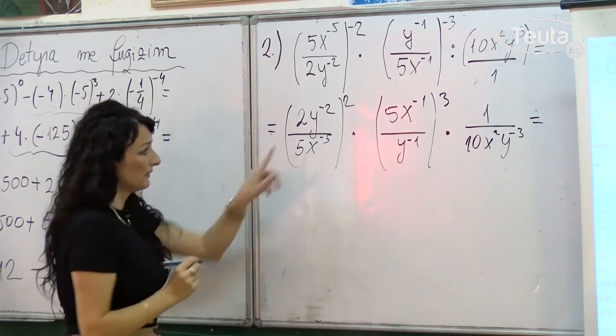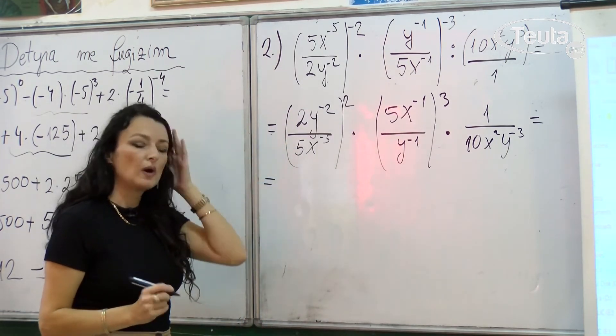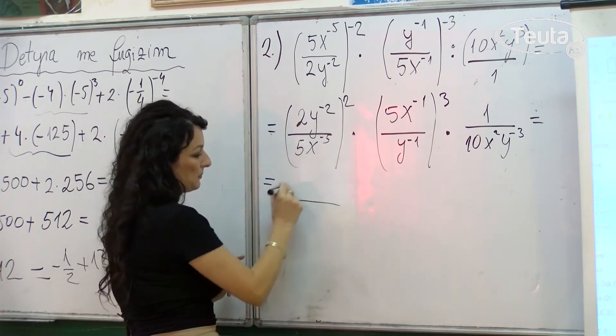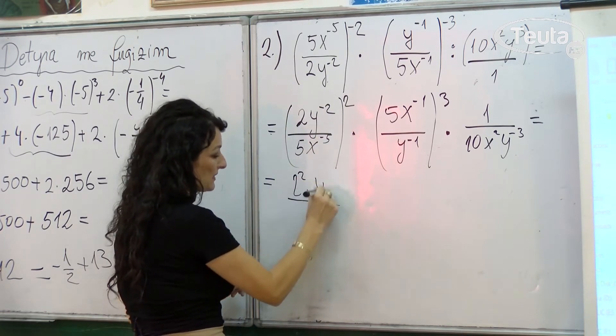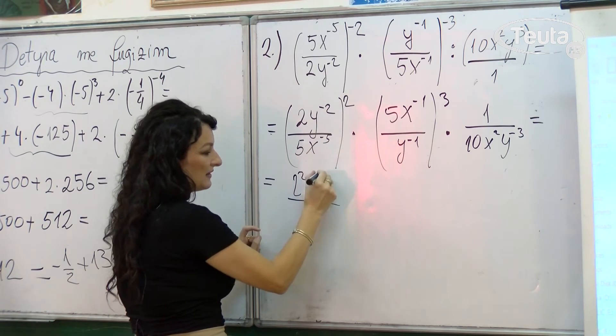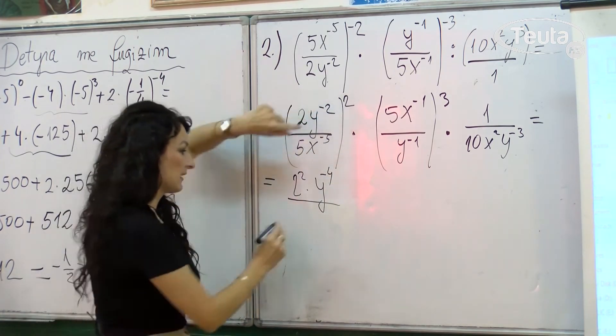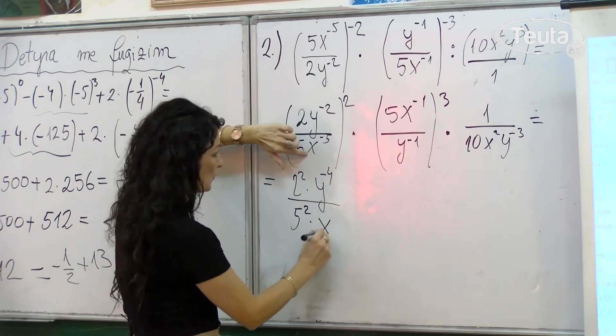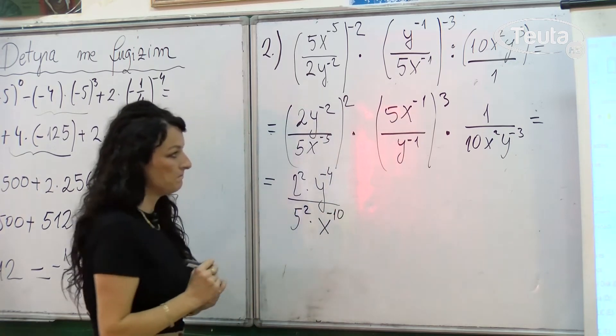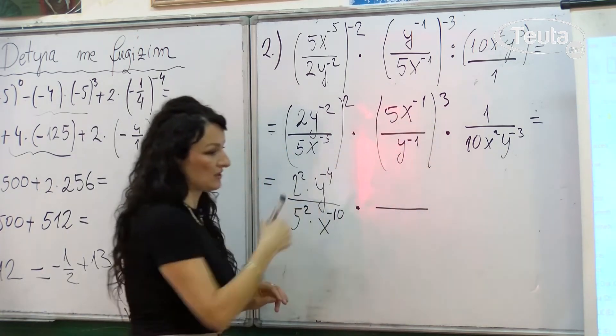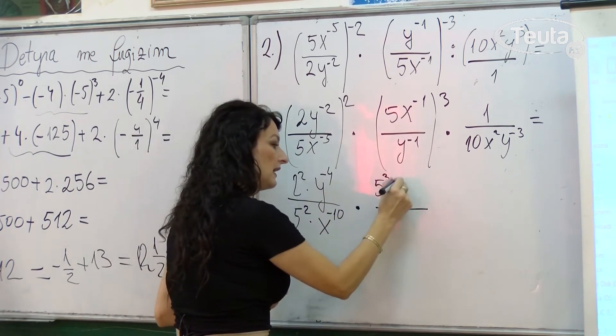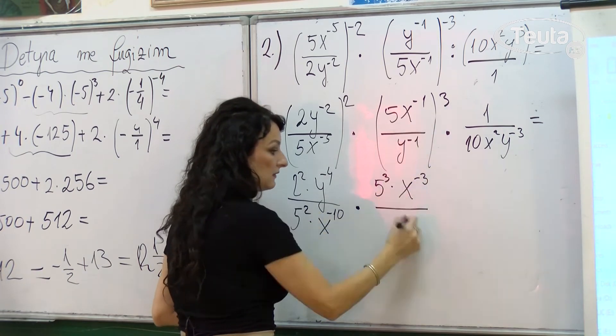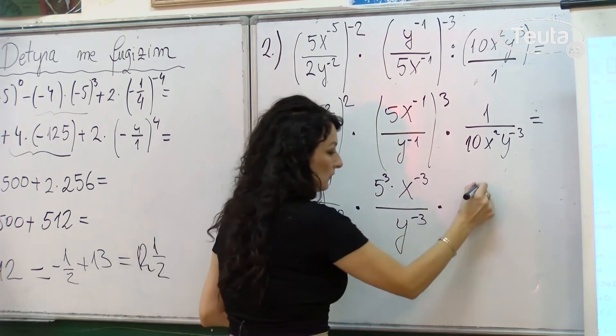Veprimi im tjetër është të bëjmë ngritje në fuqi. Dhe në bazë të vetive që kemi mësuar në orën e kaluar, secili faktor i thyesës. Pra 2 në fuqinë 2 herë y në minus 2 dhe do të bëjmë minus 2 në të dytën, pra, edhe ata që i shumëzojmë janë minus 4. 5 në fuqinë 2 dhe x në minus 5 dhe krejt në të dytën është x në fuqinë minus 5 herë 2, pra minus 10. Vazhdojmë më gjatë, edhe këtu kemi fuqizim, pra 5 në të tretën herë x në fuqinë minus 1 herë 3 minus 3, dhe y në minus 1 minus 1 herë 3 janë minus 3. Kurse thyesën e 3 do ta përshkruaj.